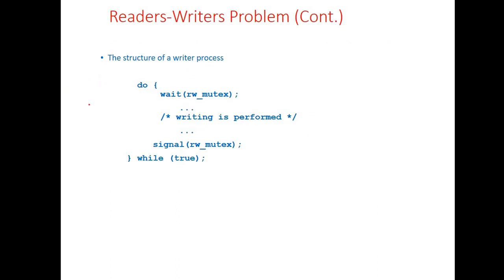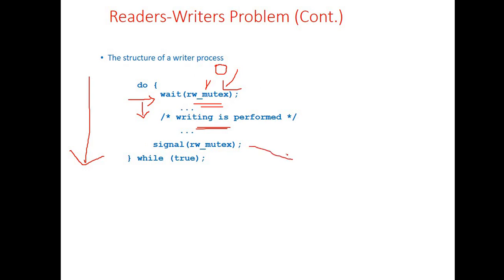The structure of the writer process is very simple. The writer wants to enter the critical section to perform the writing operation, so it checks the availability of the rw_mutex variable. If rw_mutex is 1 (free), the writer is permitted to enter the critical section. If rw_mutex is 0, some other reader is in the critical section and the writer is blocked. Once the writer gets permission it performs the write operation, then exits by calling the signal function, incrementing rw_mutex from 0 to 1.